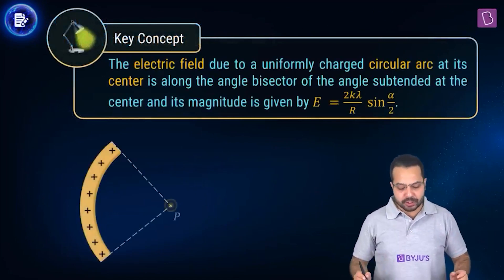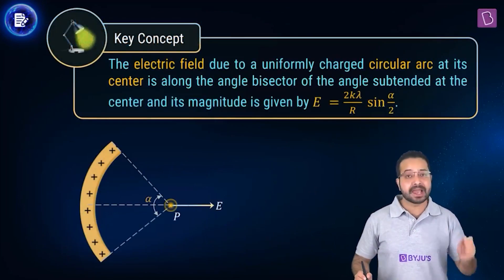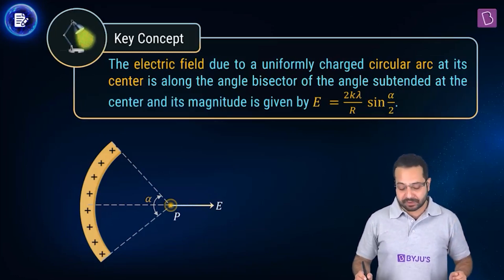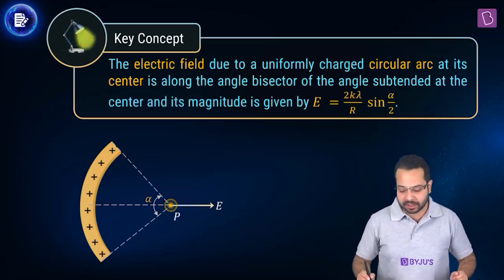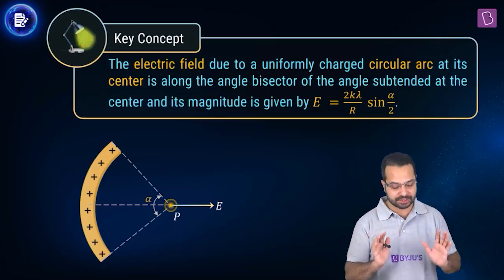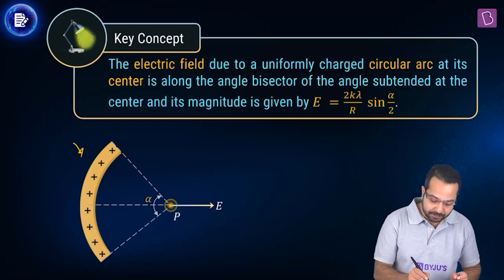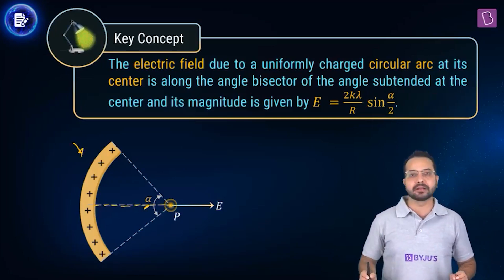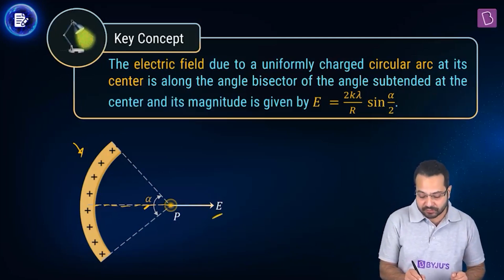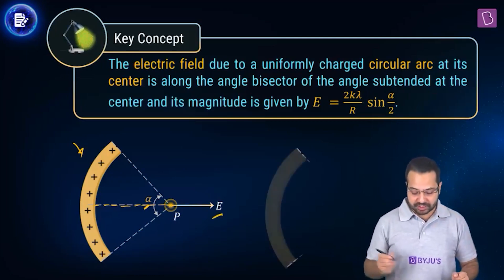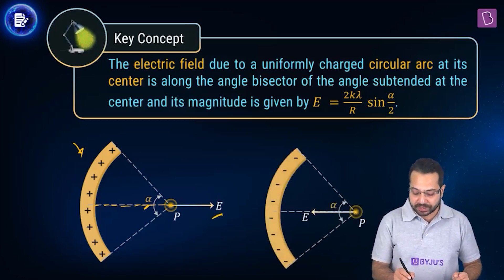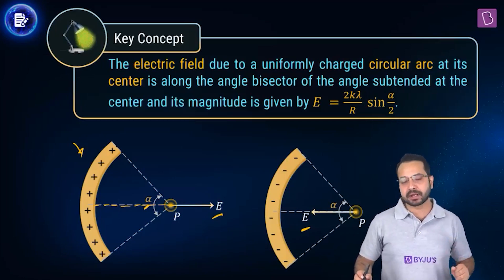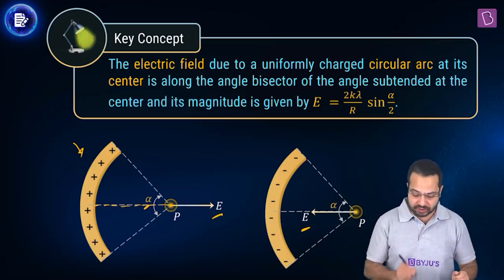The key concept is that the electric field due to a uniformly charged circular arc at its center is along the angle bisector of the angle subtended at the center, and its magnitude is given by E = 2kλ/R · sin(α/2). If the arc subtends angle α at the center, the field is along the angle bisector. For positive charge it points away from the charge; for negative charge it points toward the charge.